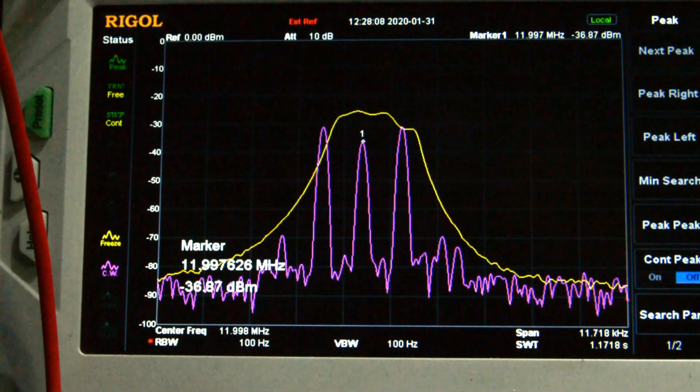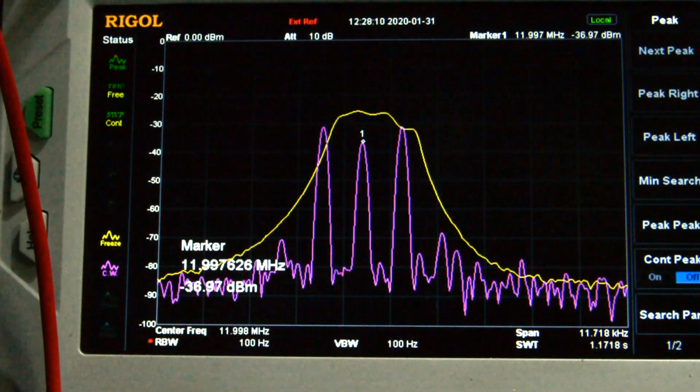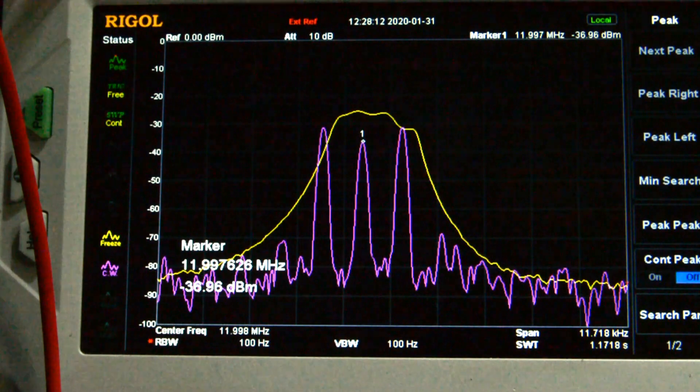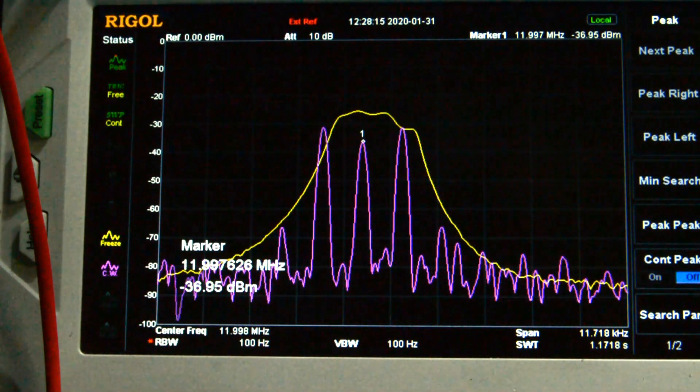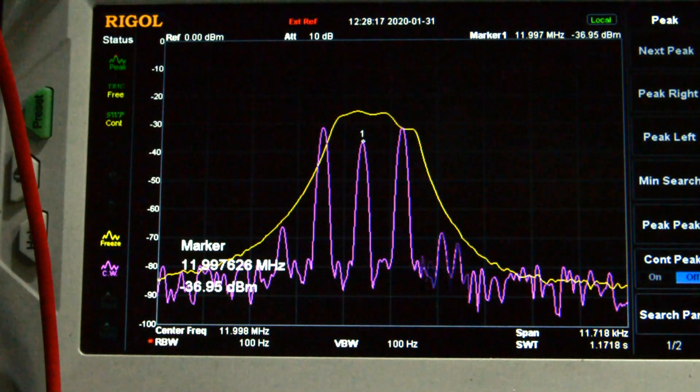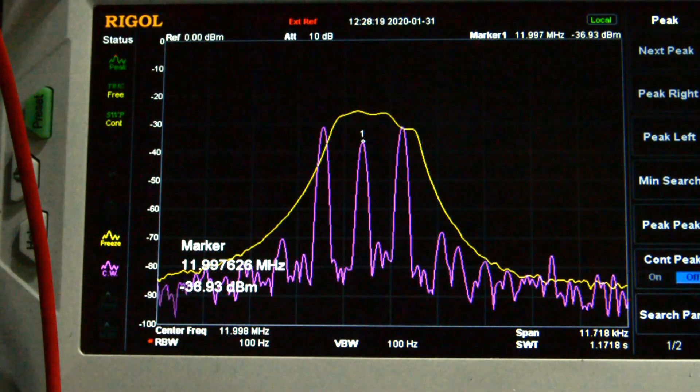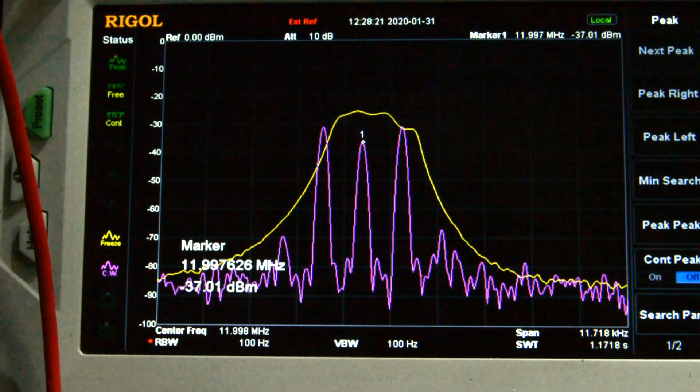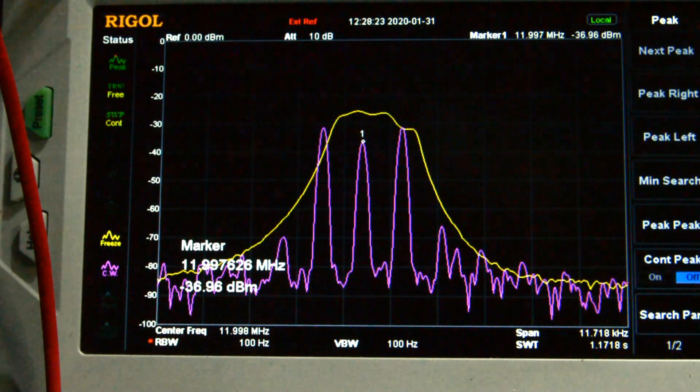We've also got the BFO oscillator that we made running and that's going into the balance modulator. The spectrum analyzer you're looking at is coupled up to the output of the balance modulator. It's just the other side of the small attenuator you'll see in the circuit diagram.